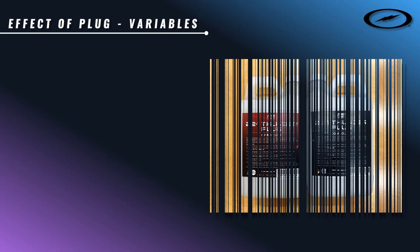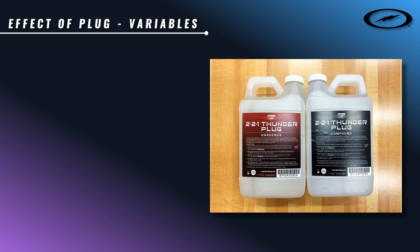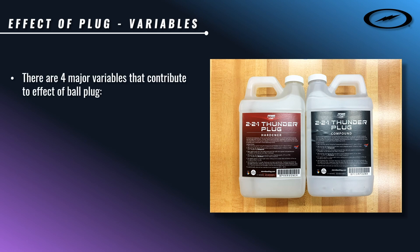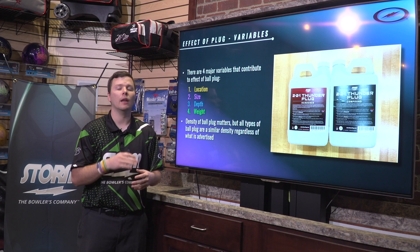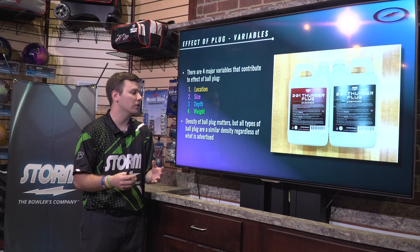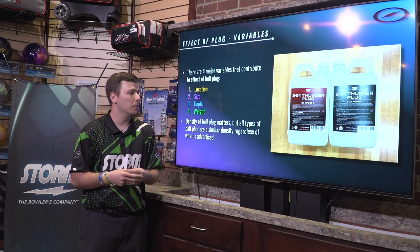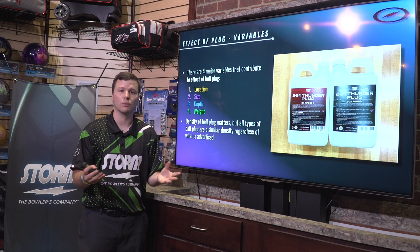There are four major variables that are going to contribute to the effect of ball plug. Those four variables are going to be the location, the size, the depth, and the weight of the bowling ball. Those are our four biggest contributing variables to how that ball plug is going to influence both the dynamics and ball motion. On a side note, the density of the ball plug is going to matter, but at Storm we've tested all the different kinds of ball plugs on the market and they all have a very similar density regardless of what is advertised. So we're going to forego density of ball plug because they're all going to be extremely similar regardless of brand.